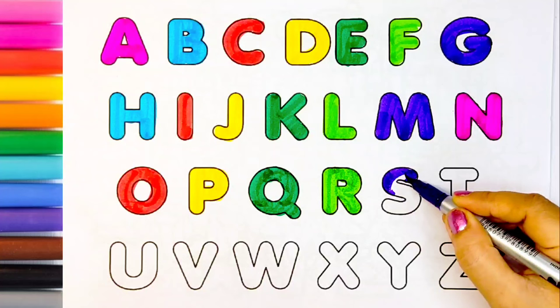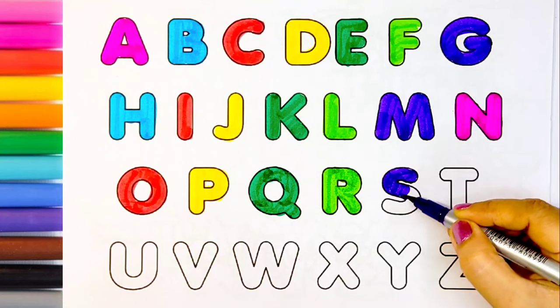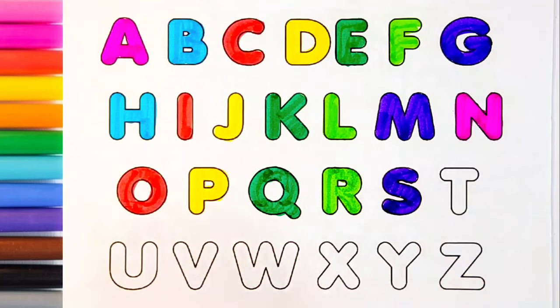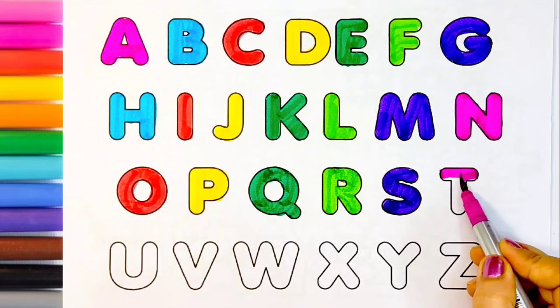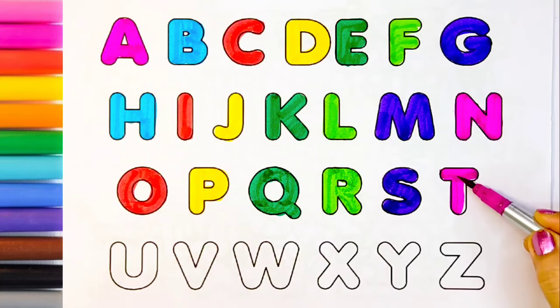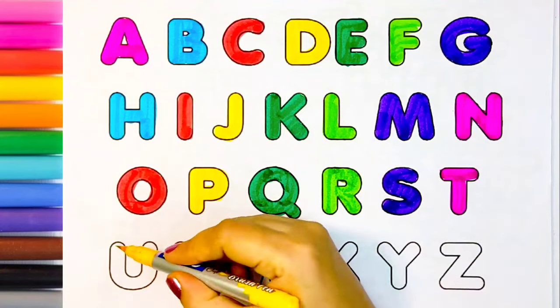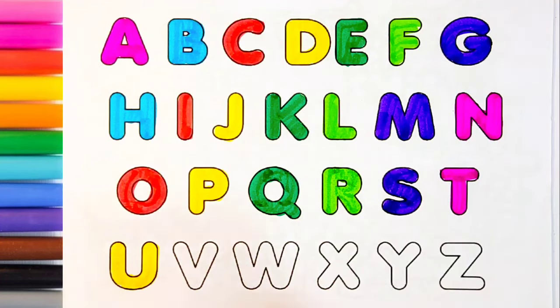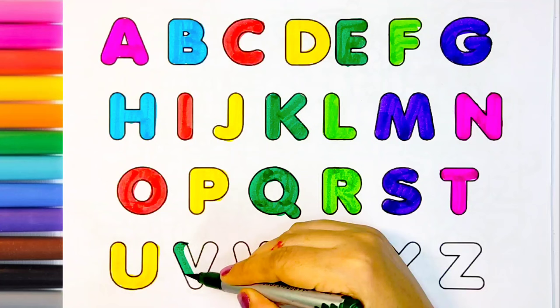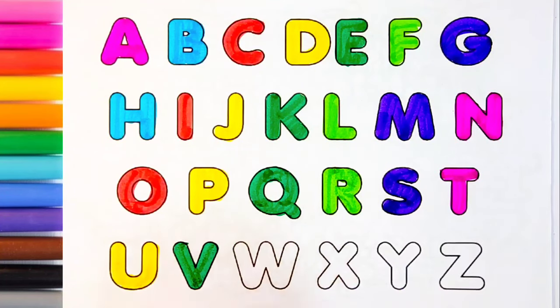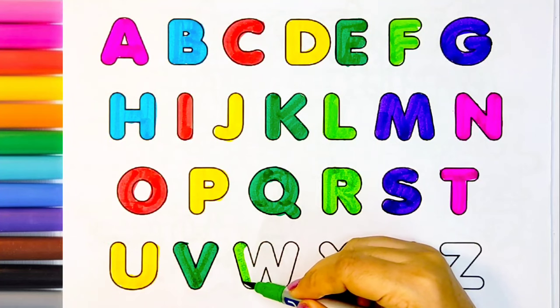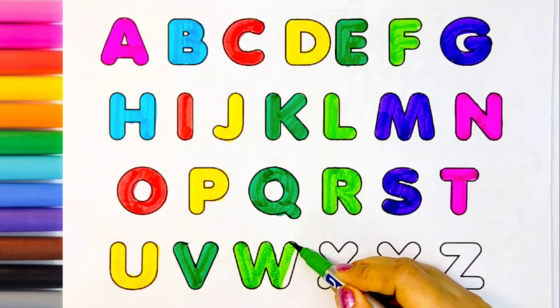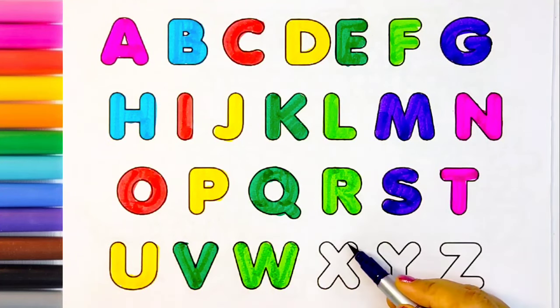Now I know my ABCs, next time won't you sing with me. S, S for sun, pink color. T, T for tiger, yellow color. U, U for uniform, dark green color. V, V for van, light green color. W, W for wolf, purple color.